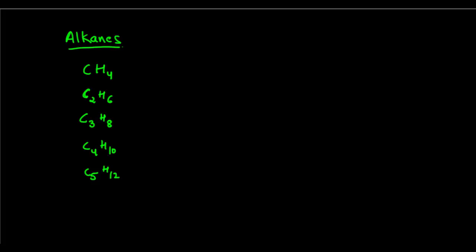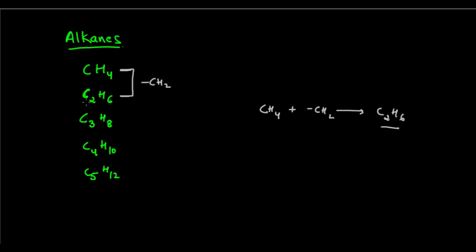Now let's make some observations. This is a series of alkanes, and you can see that between two consecutive members there is a difference of one CH2 unit. For example, if we have CH4 and add one CH2 unit — one more carbon and two more hydrogen — we get C2H6, which is ethane.